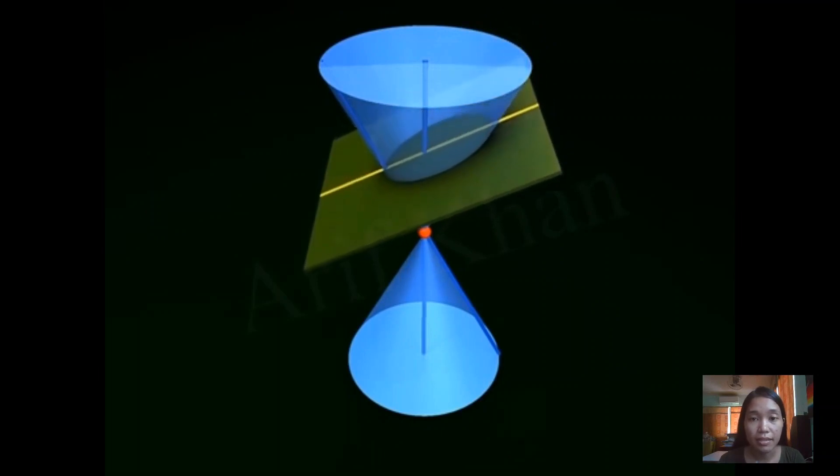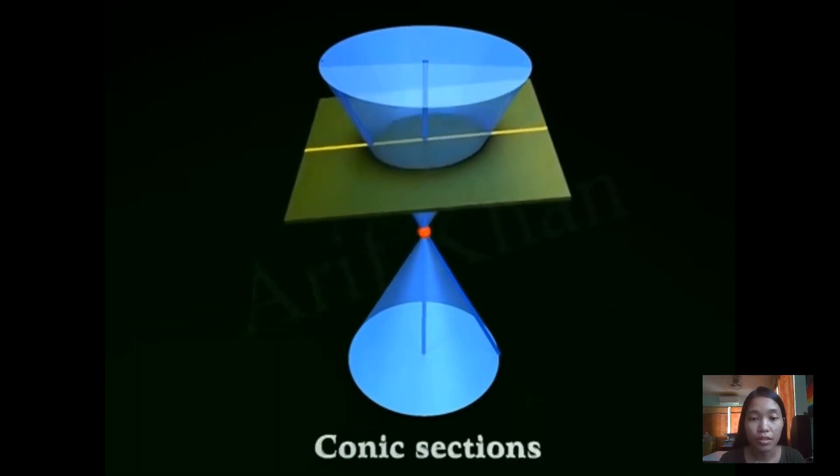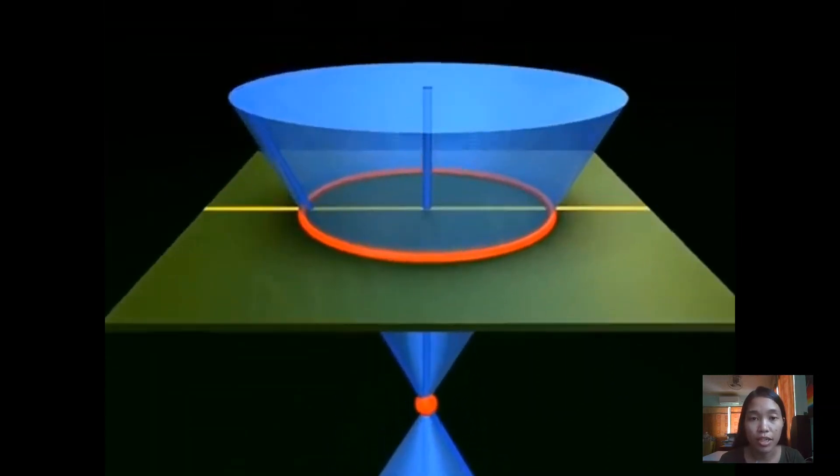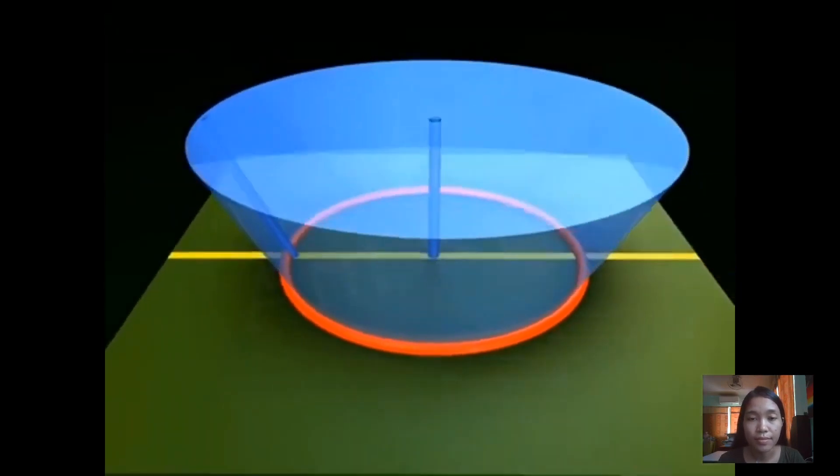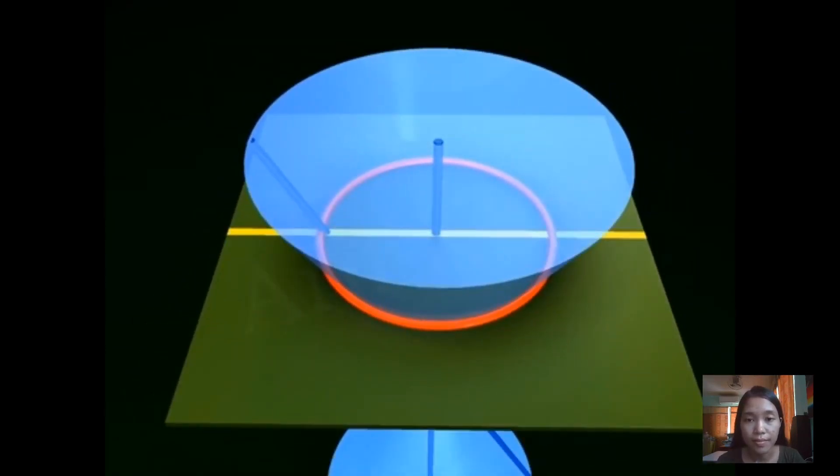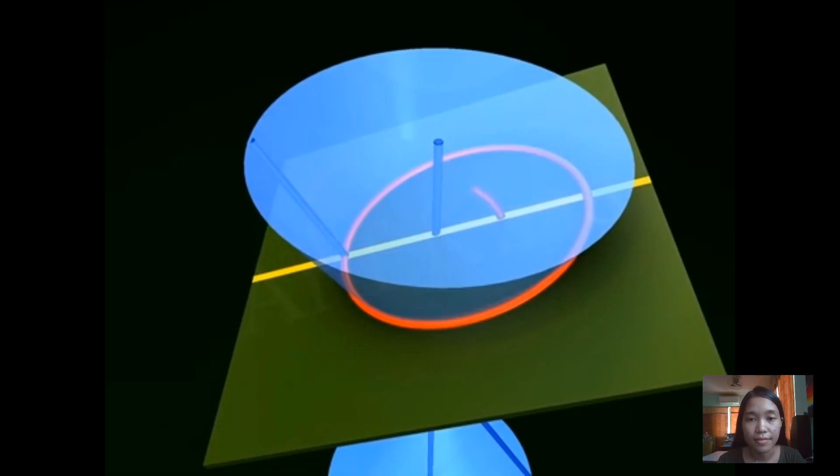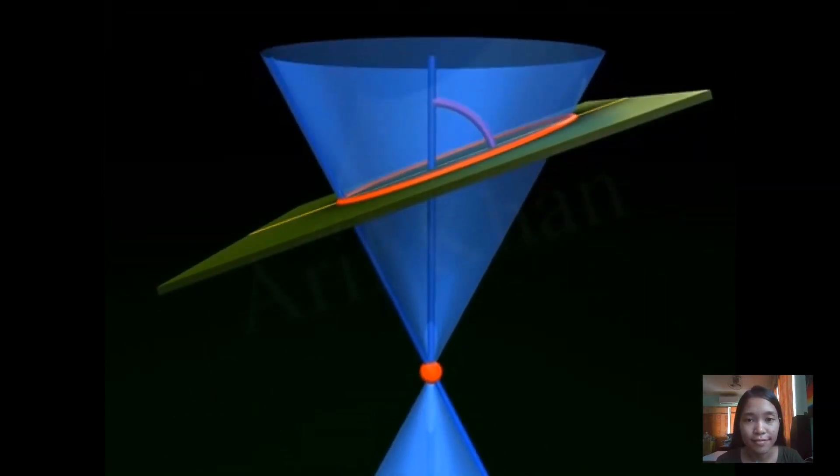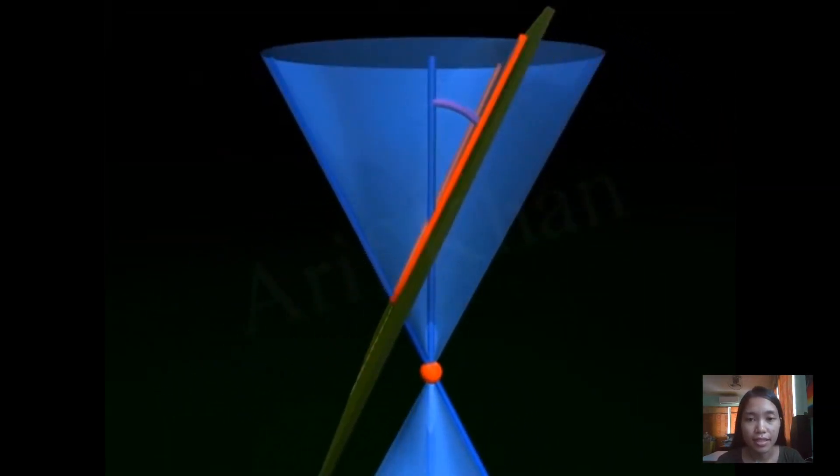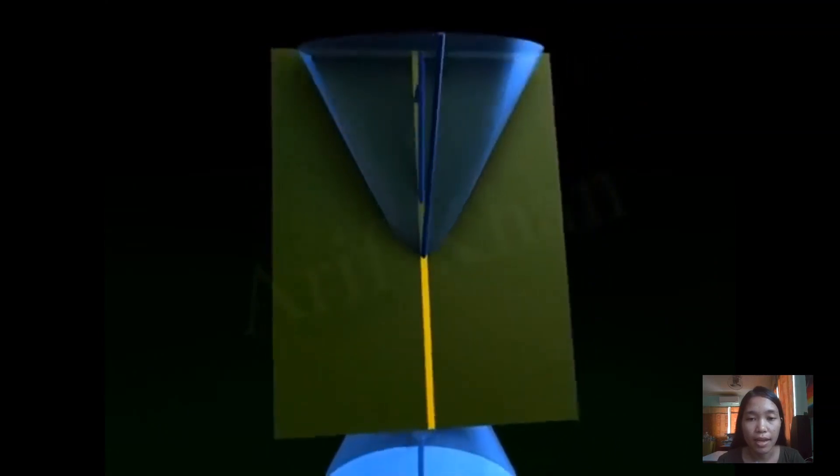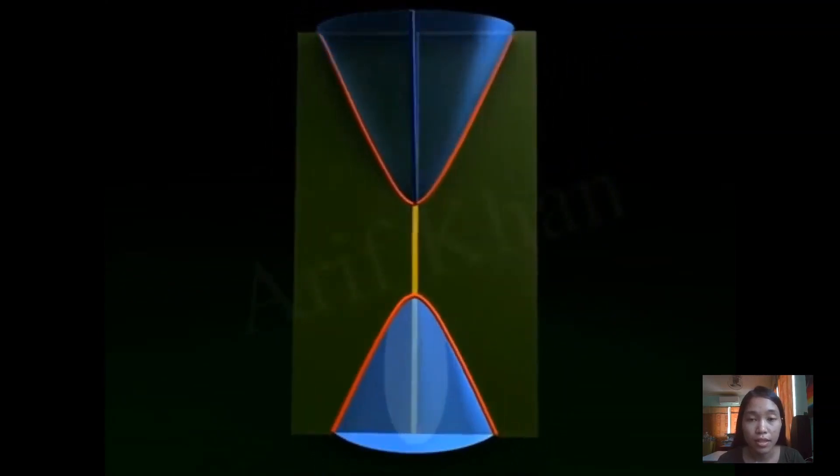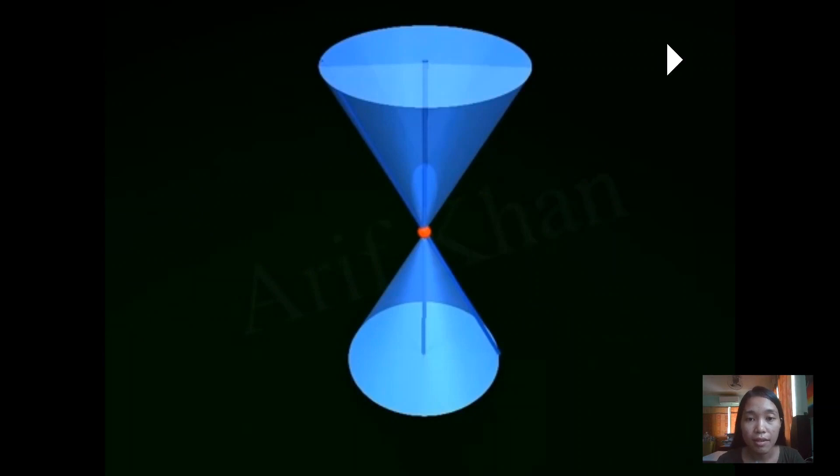Depending on its position, we have different shapes. It also depends on the angles that it performs from the axis to the plane, not from the generator anymore. Whether it includes the first nap or includes both naps, it depends. Now let's go to ellipse.